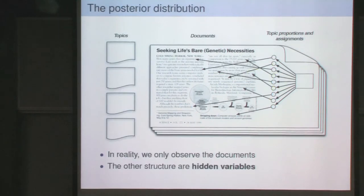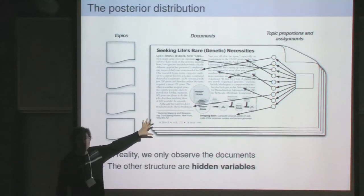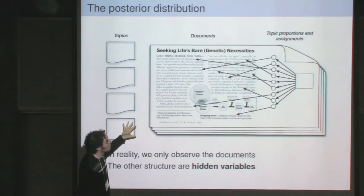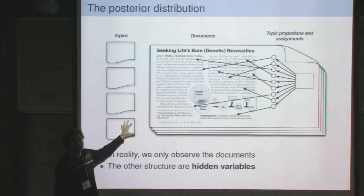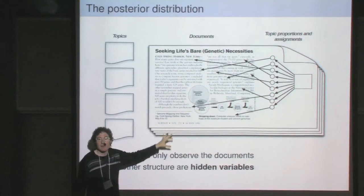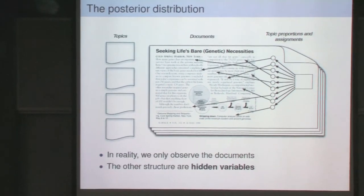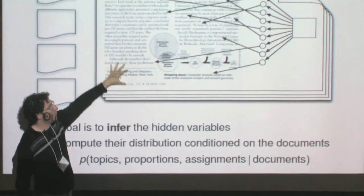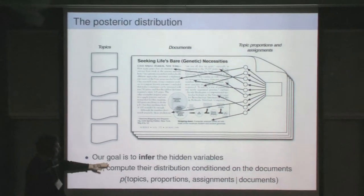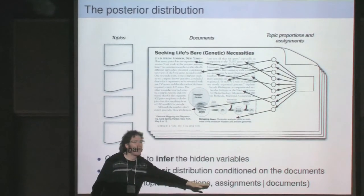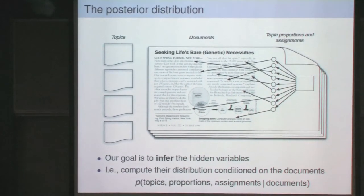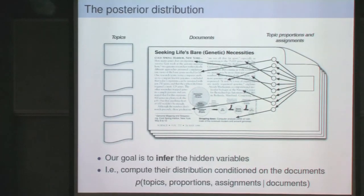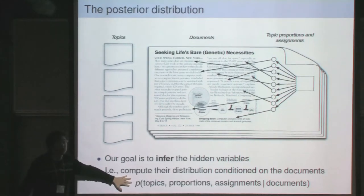The problem is that in reality we only observe the documents themselves. Our computational goal is to reverse this generative process—to figure out the structure that best describes this collection under these assumptions. That's an inference problem. The topics, topic proportions, and topic assignments are all hidden random variables. The observed random variables are the words of the collection. Our goal is to compute the posterior distribution of the topics, the proportions, and the assignments given the documents.